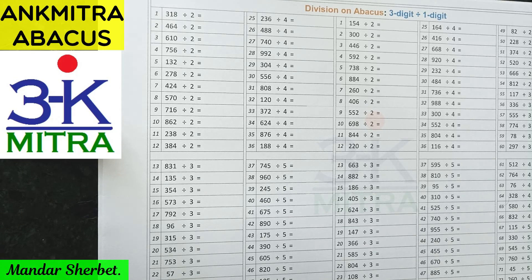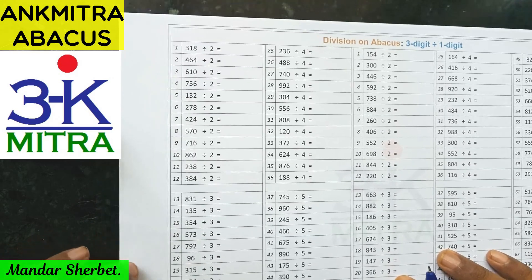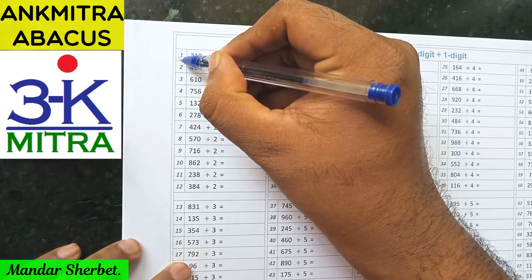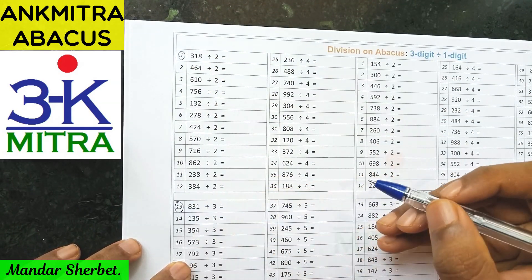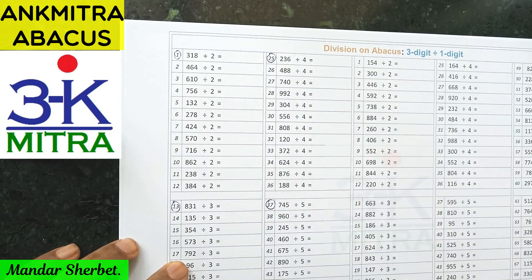Hello everyone. In this video I'll be explaining the basic division on abacus procedure. This procedure is taught starting in stage 3 of my abacus course. The page you can see right now is one of the pages from the stage 3 workbook — it involves three-digit numbers divided by one-digit divisors. I'll be solving a few select examples from this page in this video: this one, this one, this one, and this one — these four examples.